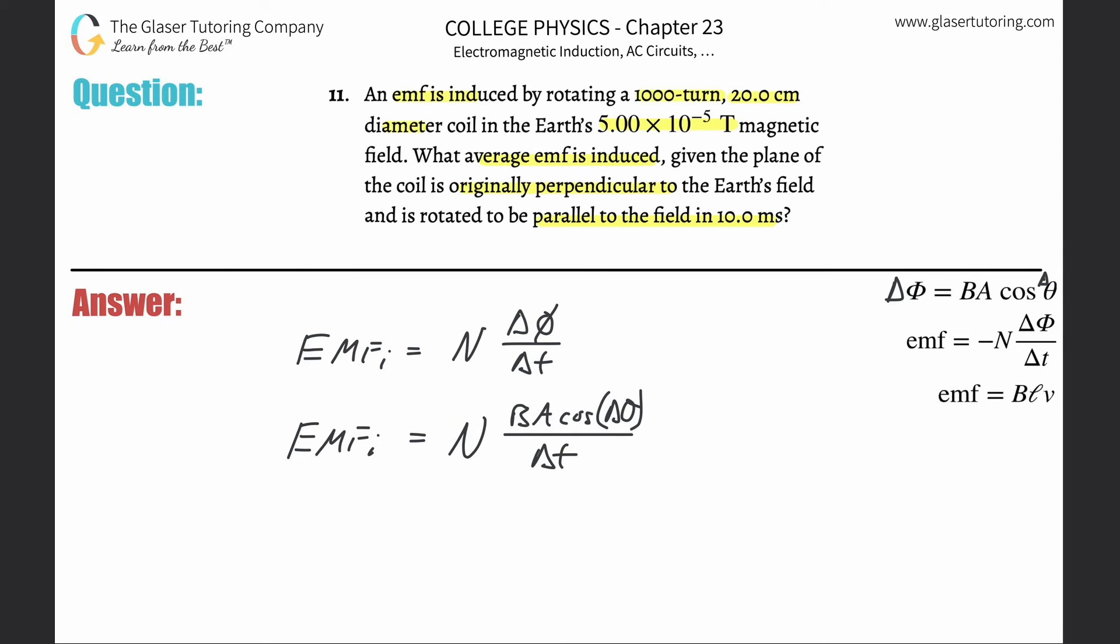So it says now that the plane of the coil is originally perpendicular to the Earth's magnetic field. So what that means is that we have some coil, here's the coil. Actually, I'm going to view it like this, like it's laying on the floor or something.